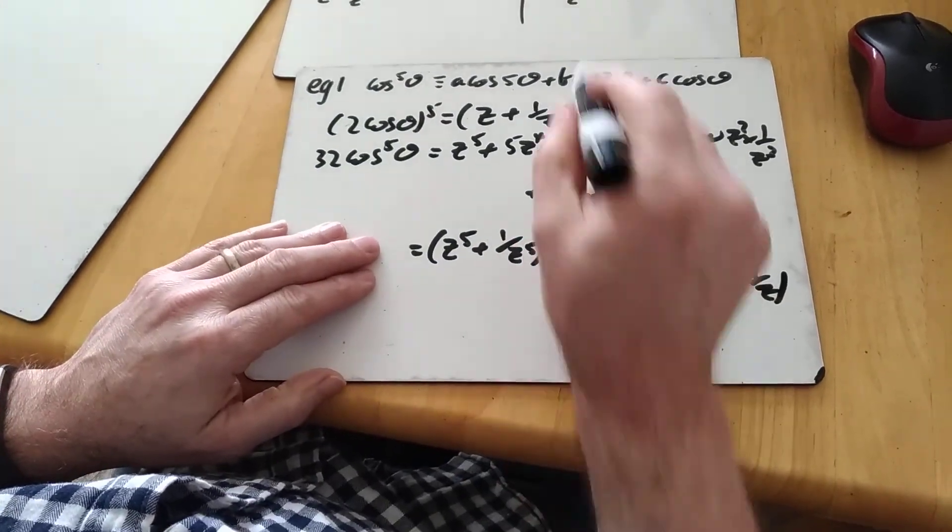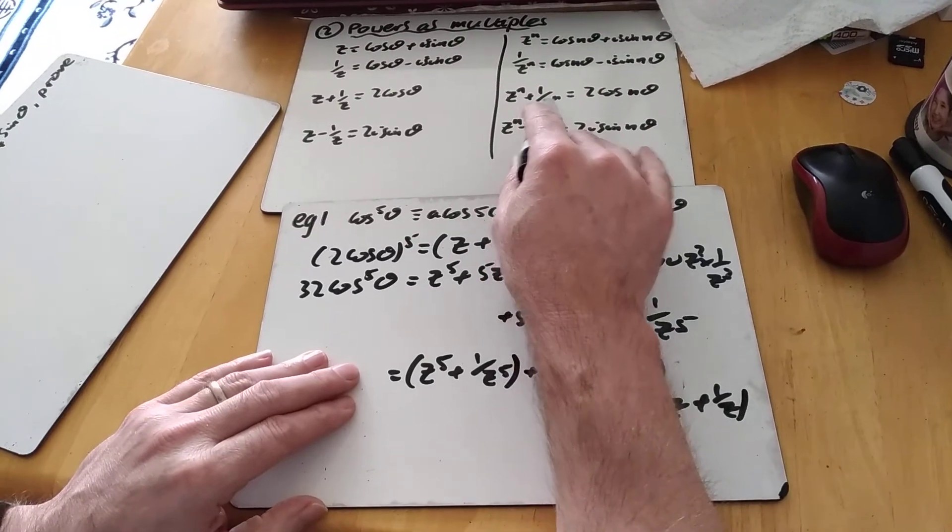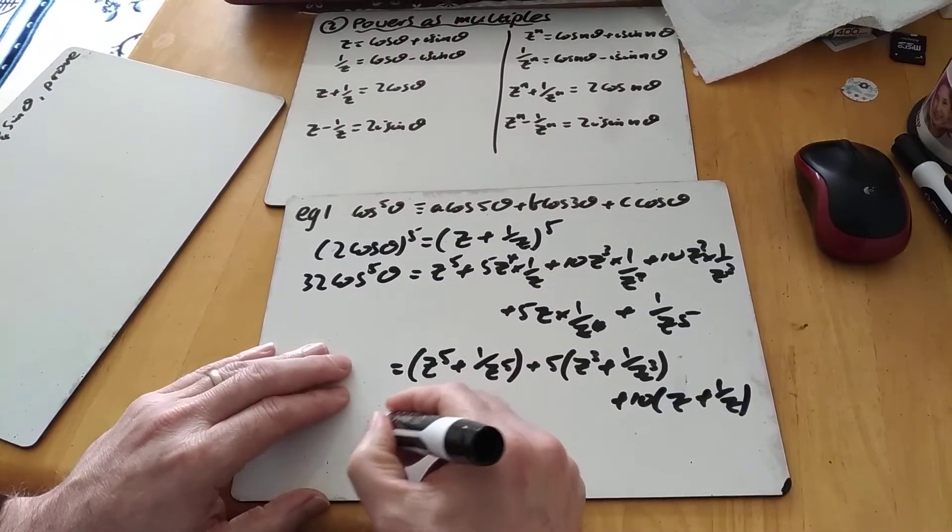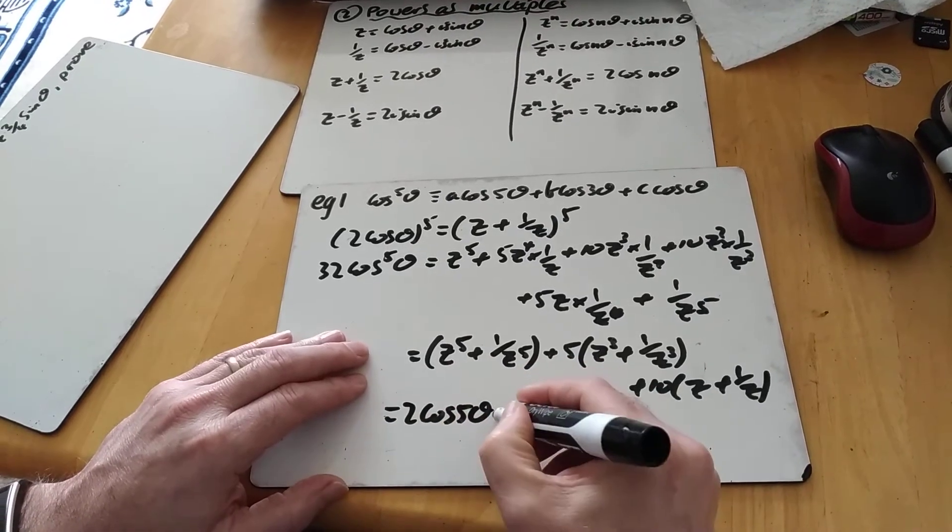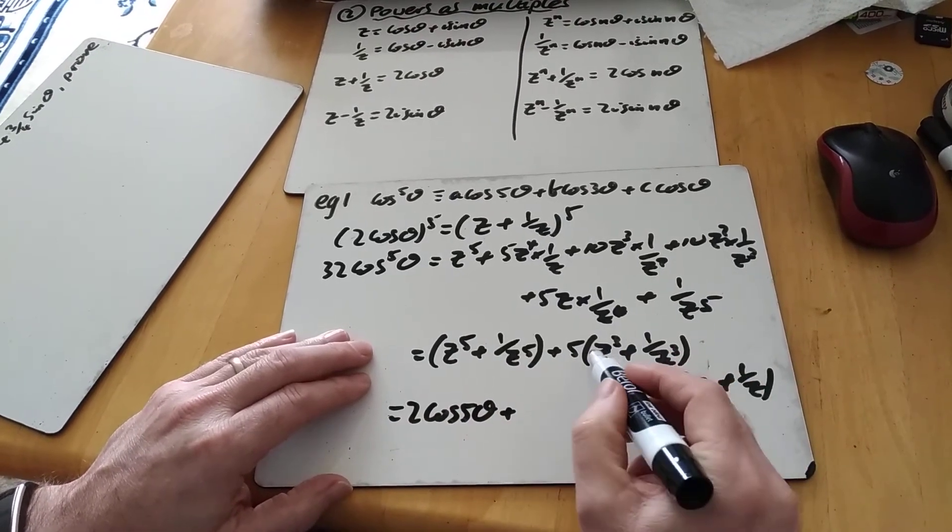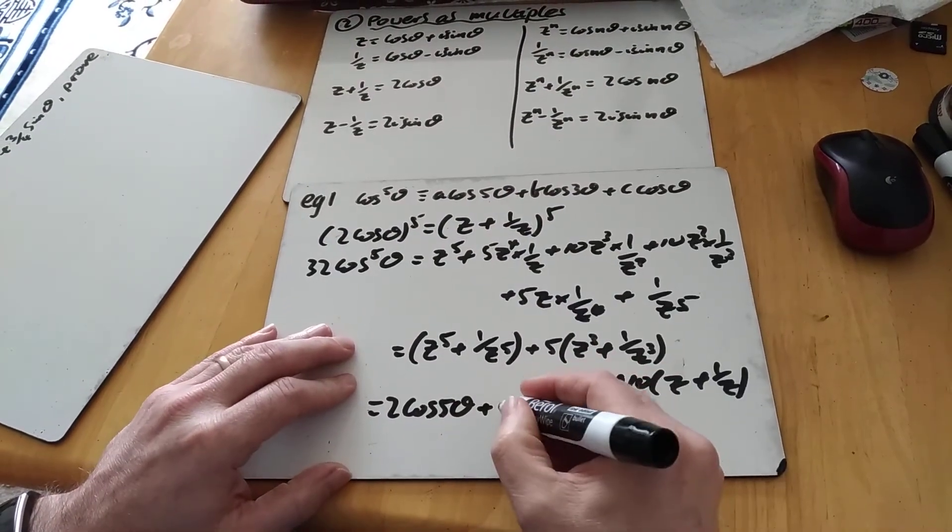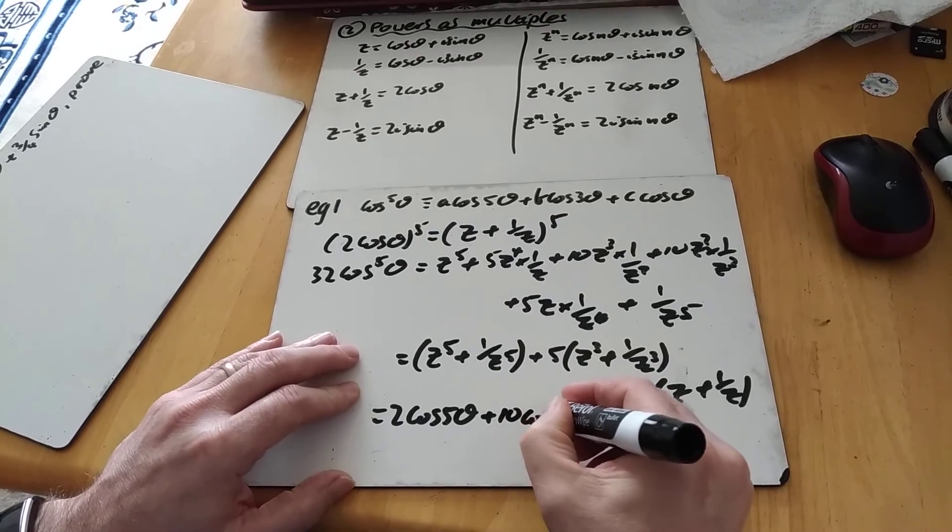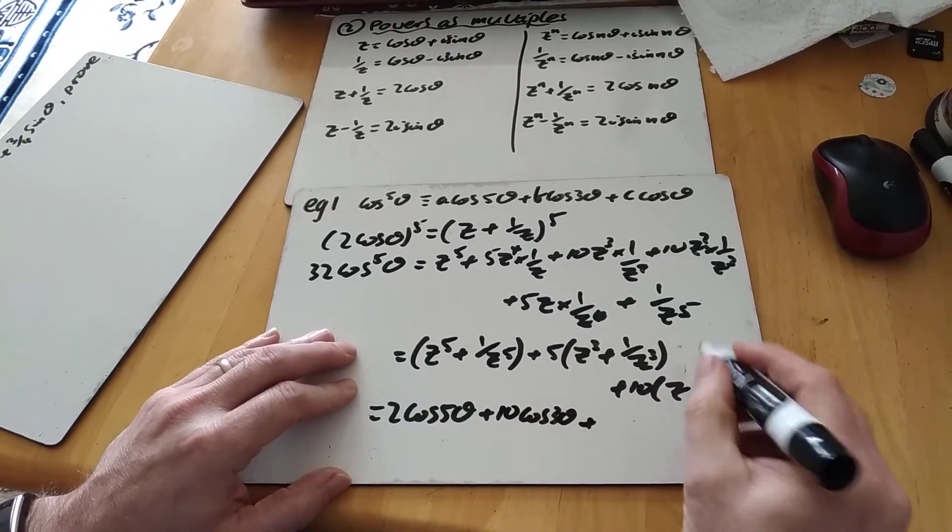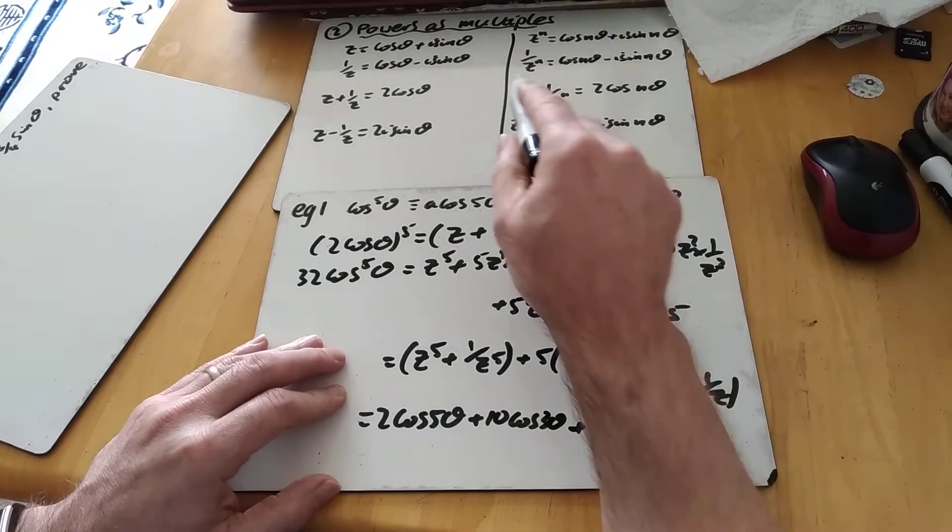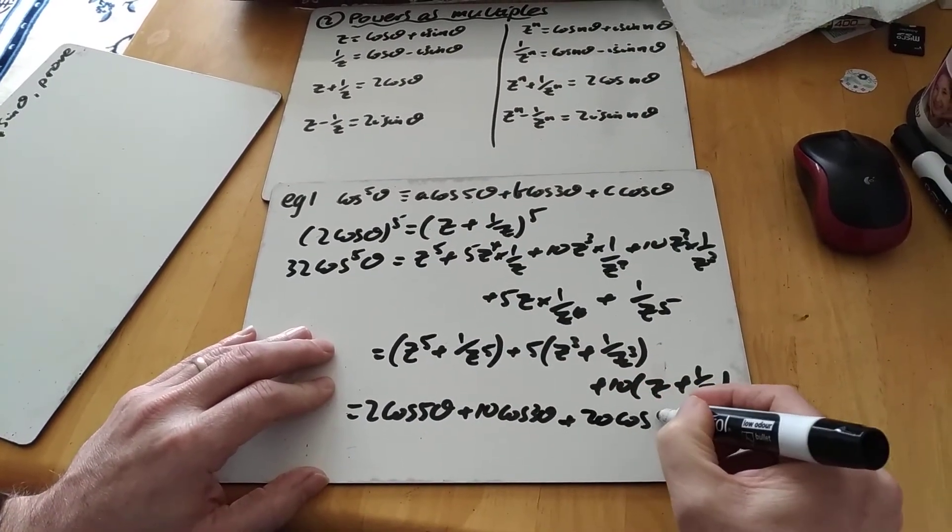And what have we got here then? z to the 5 plus 1 over z to the 5 using this side of De Moivre's theorem is simply 2 cos 5 theta. And then 5 lots of z cubed plus 1 over z cubed using this one is 5 lots of 2 cos 3 theta. And then lastly, 10 lots of z plus 1 over z here is 20 cos theta.